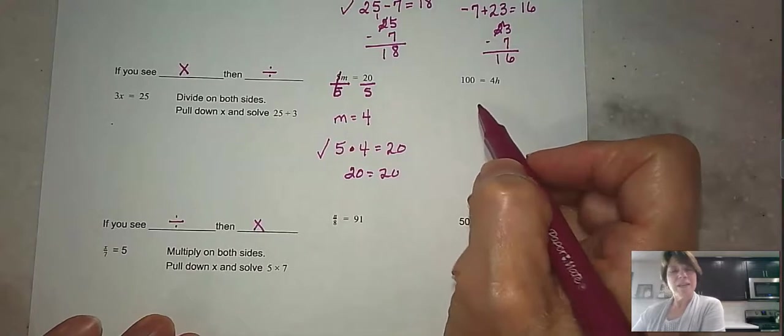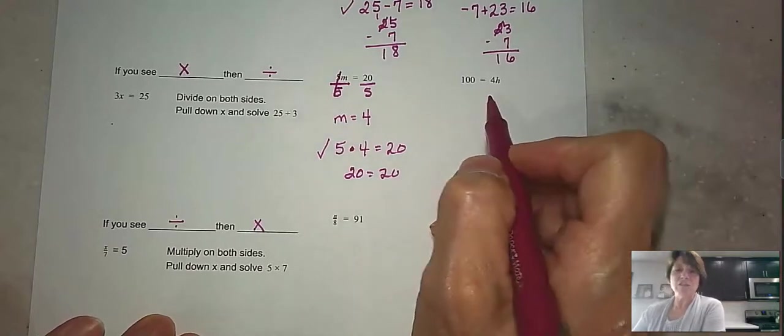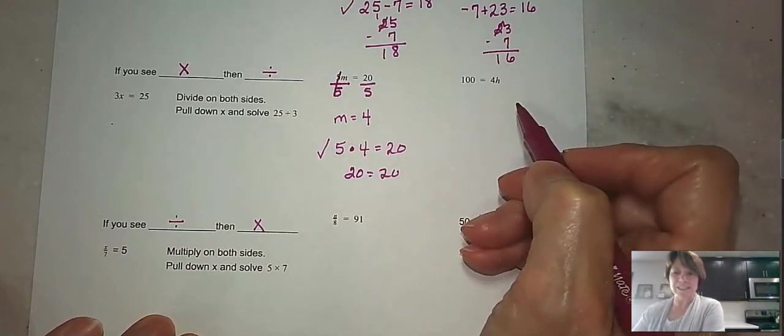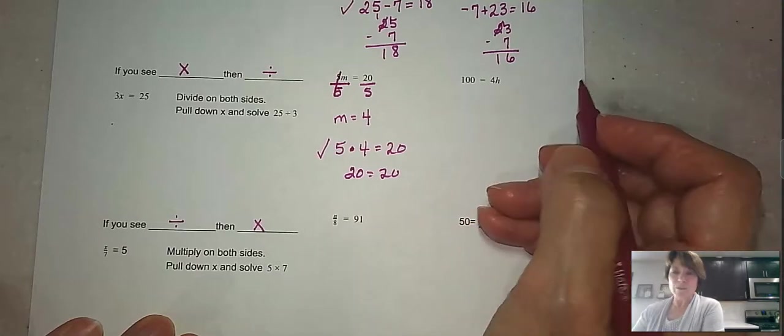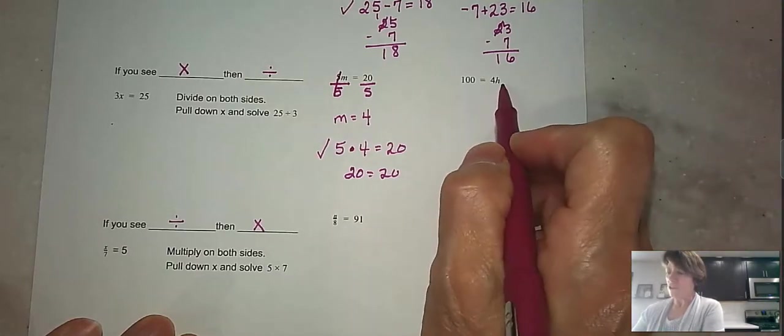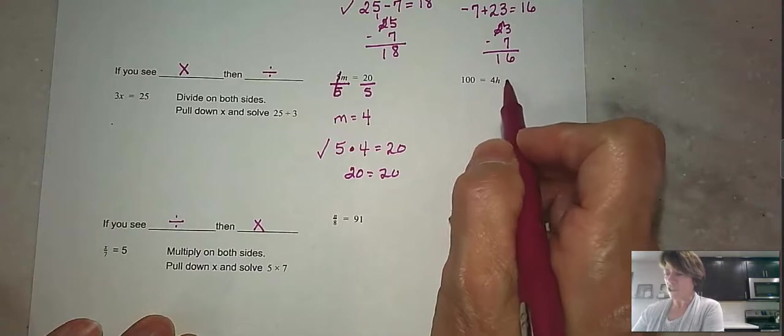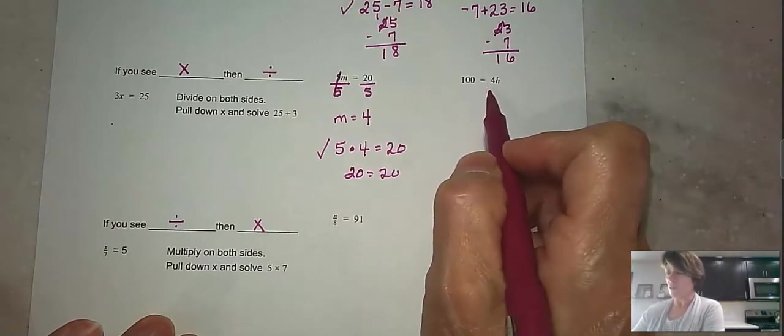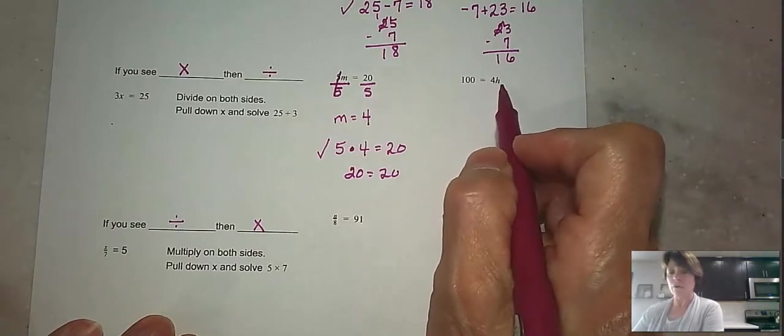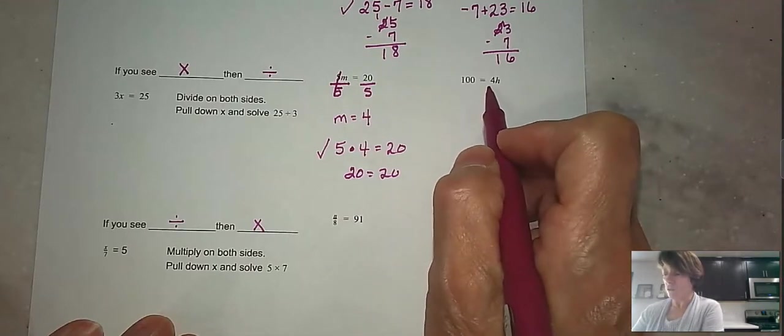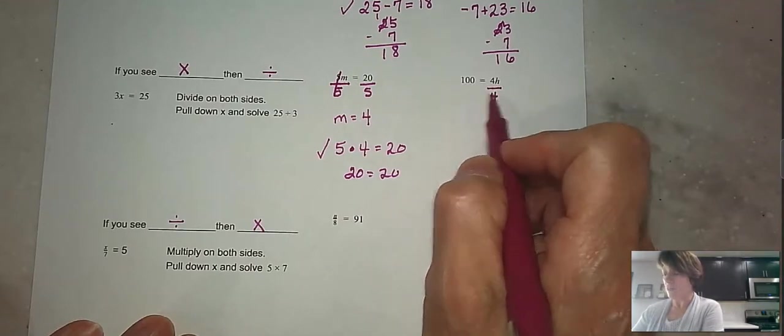All right, now look at this next problem. It's the same thing. You just see that the variable has been switched to the right side of the equal sign. No problems there. Remember, we're just going to do the opposite of the operation that is happening to the variable. And so because we're multiplying this 4 times the variable h, we're going to do the opposite and divide both sides by 4.